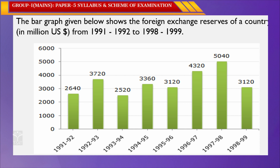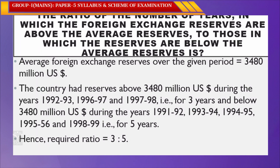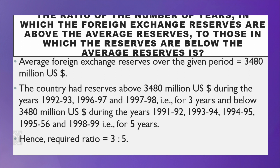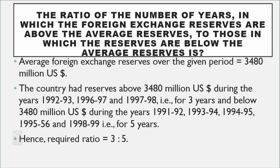Continuing the bar graph data: 1994-95 was 3,360; 1995-96 was 3,120; 1996-97 was 4,320; 1997-98 was 3,120. The question asks: what is the ratio of the number of years in which the foreign exchange reserves are above the average reserves to those in which the reserves are below the average reserves?